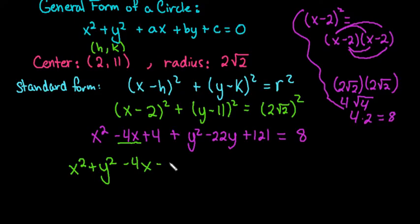The y term would come next, so minus 22y. And then we would have to combine all of our terms, and I'm going to bring this 8 to the other side. So I would have 4 plus 121, which gives us 125, and then because I'm bringing this over, I would subtract the 8. So 125 minus 8 would give me 117.